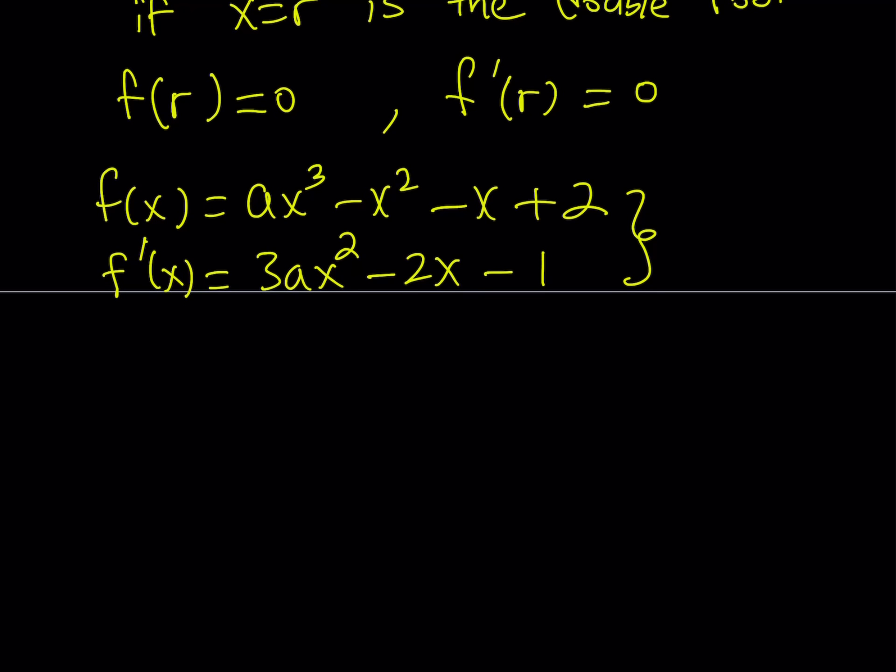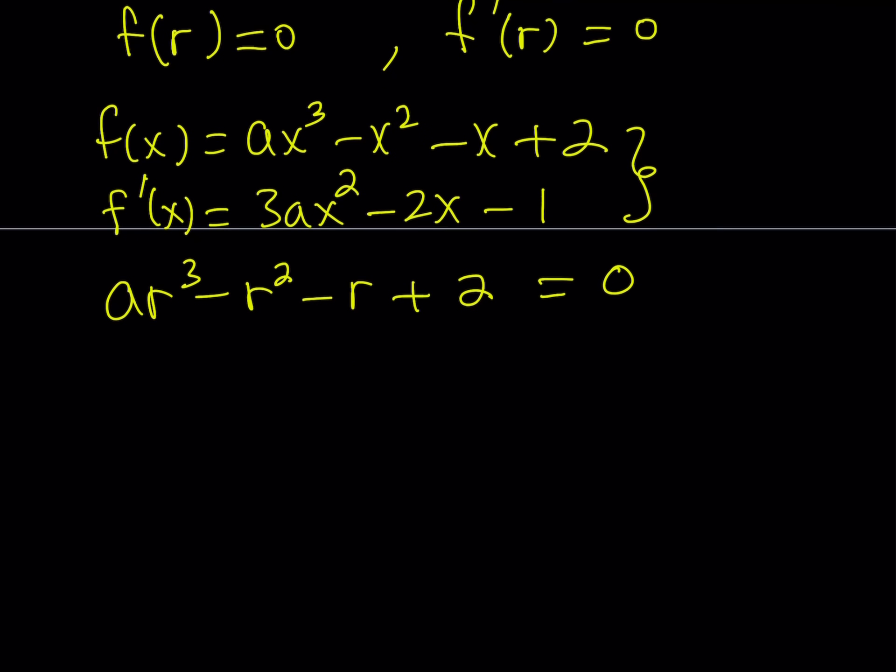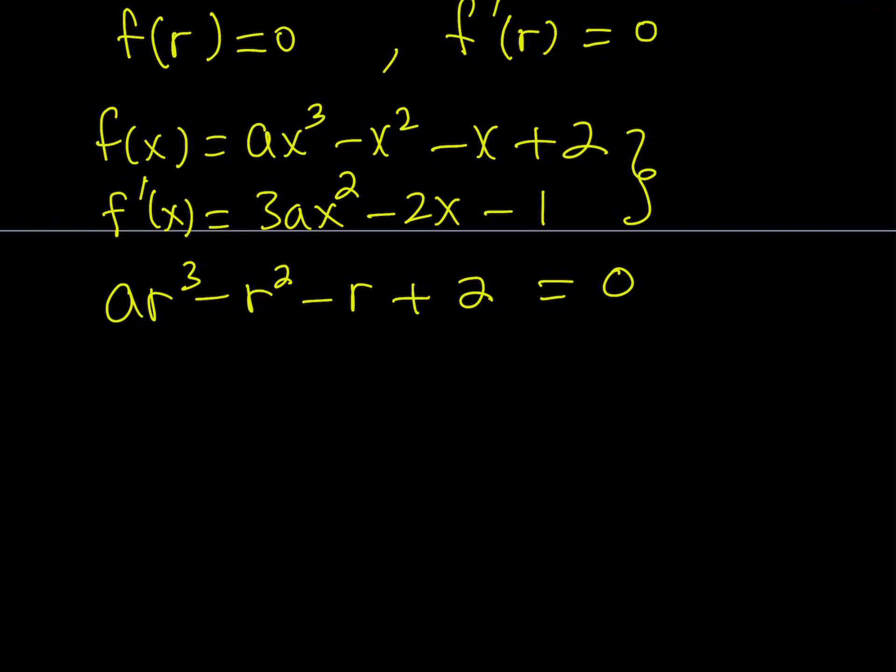The first one gives us ar³ - r² - r + 2 = 0. So that's my first equation and I can simplify this a little bit, maybe isolate the ar³ and so forth, but let's go ahead and write the second one as well.